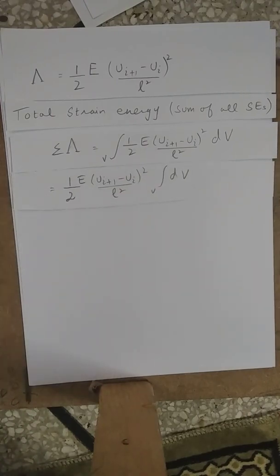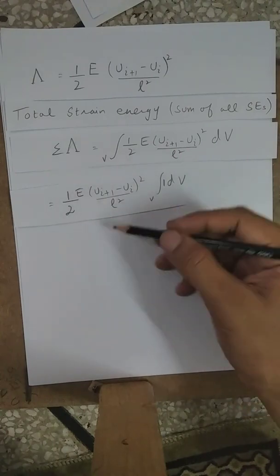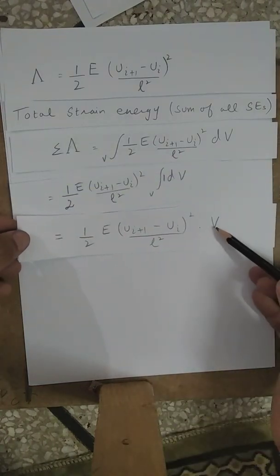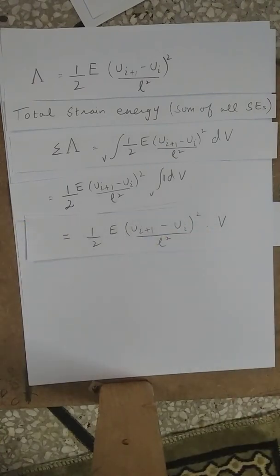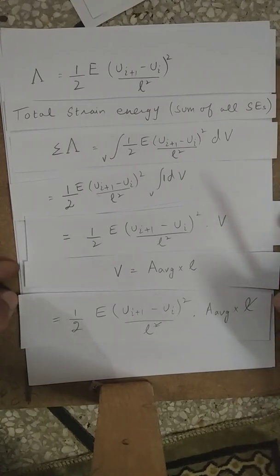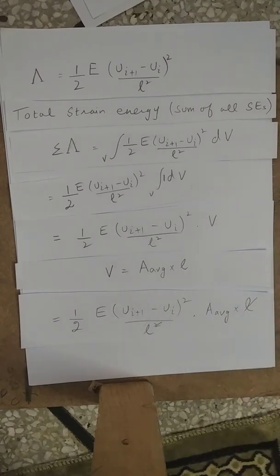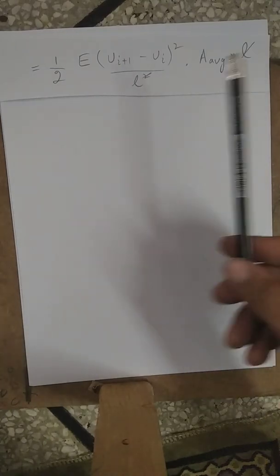The integration of 1 over the volume gives us the volume. So the strain energy becomes (1/2) · E · (U_{I+1} − U_I)² · Volume / L². Since Volume = Area · Length, we substitute that in, and after cancelling one power of L, we obtain the simplified strain energy formula for one element.